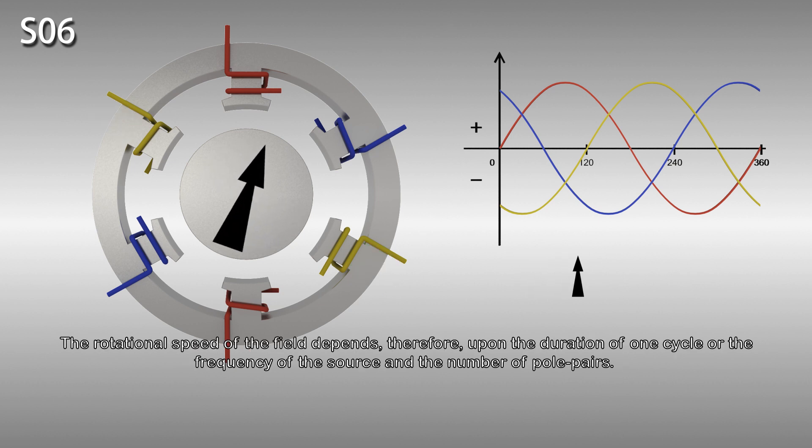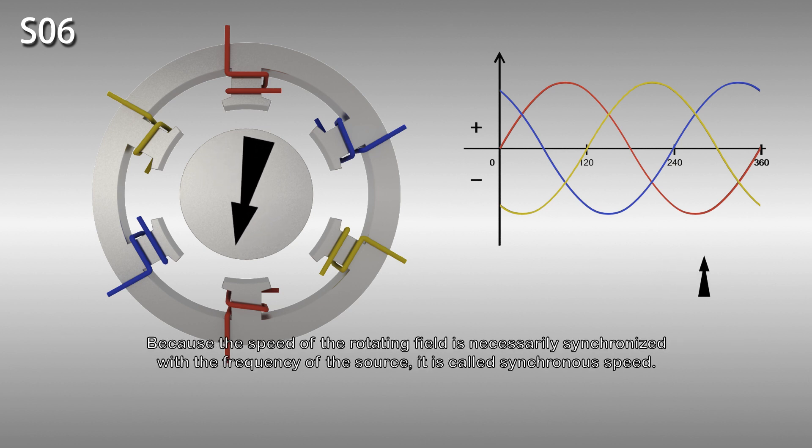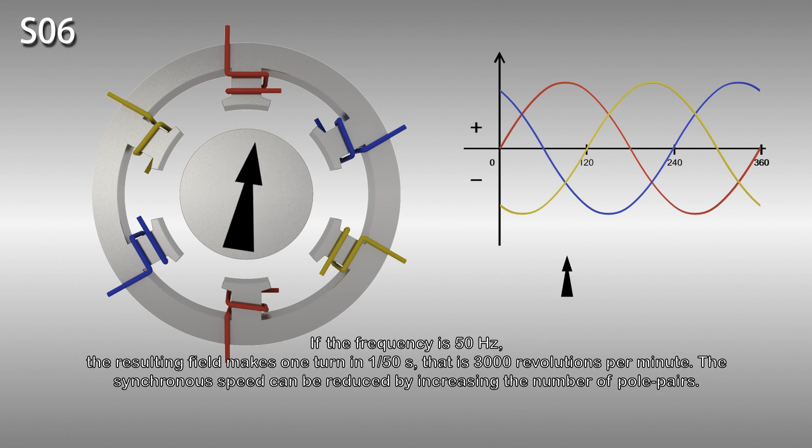The magnetic field rotates with time and makes one complete turn in one cycle of current flow. The rotational speed of the field depends therefore upon the duration of one cycle or the frequency of the source and the number of pole pairs. Because the speed of the rotating field is necessarily synchronized with the frequency of the source, it is called synchronous speed. If the frequency is 50 hertz, the resulting field makes one turn in one fiftieth of a second, that is 3000 revolutions per minute. The synchronous speed can be reduced by increasing the number of pole pairs.